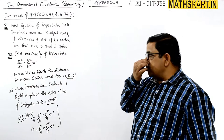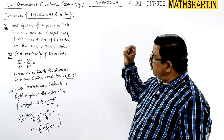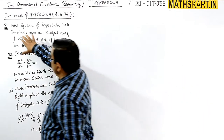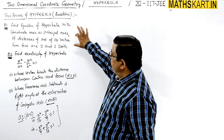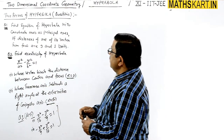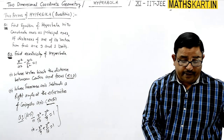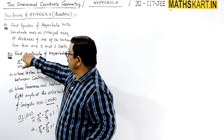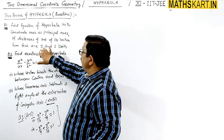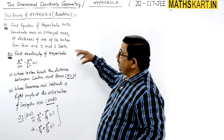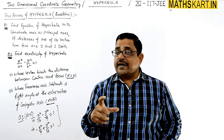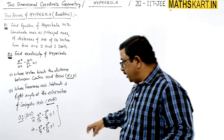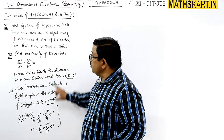Two important questions are theory-based and two are hyperbola-based. Question number one: find the equation of a hyperbola with coordinate axes as the principal axes, given that the distances of one of its vertices from the foci are 9 and 1 units. We will consider both types of hyperbola cases, so two answers are possible.